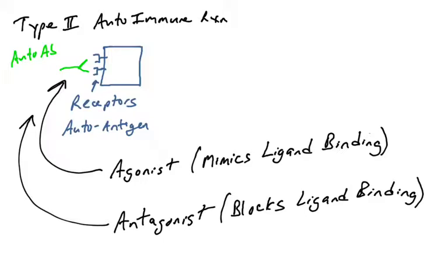If they act as agonists, when the autoantibody binds the receptor, that might mimic a ligand binding and trigger signaling into the cell. In other instances, the antibody blocks the ligand from binding, and therefore the antibody acts as an antagonist, inhibiting the signaling through that receptor. In this video, we're going to cover each one of these possible scenarios referring to autoimmune disorders.